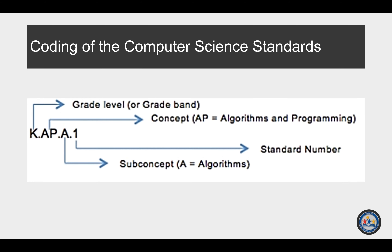This diagram shows how each of the computer science standards are coded. The initial symbol indicates the grade level — in this case, kindergarten. The second set of characters identifies the concept; here you see algorithms and programming. The third set of letters, in this case A, identifies the sub-concept. And the final symbol identifies the standard number. Note there may be multiple standards within a sub-concept.